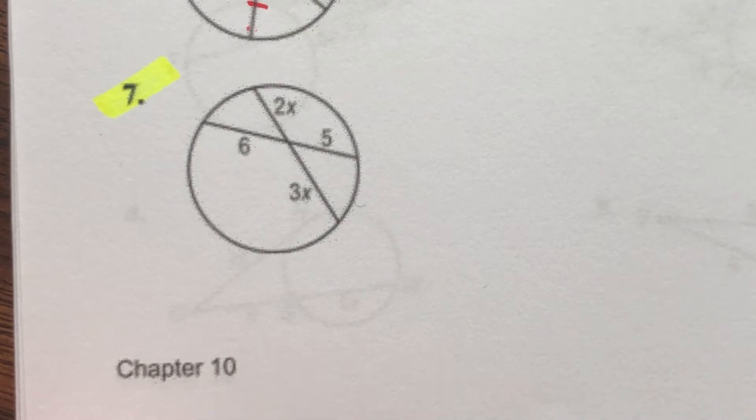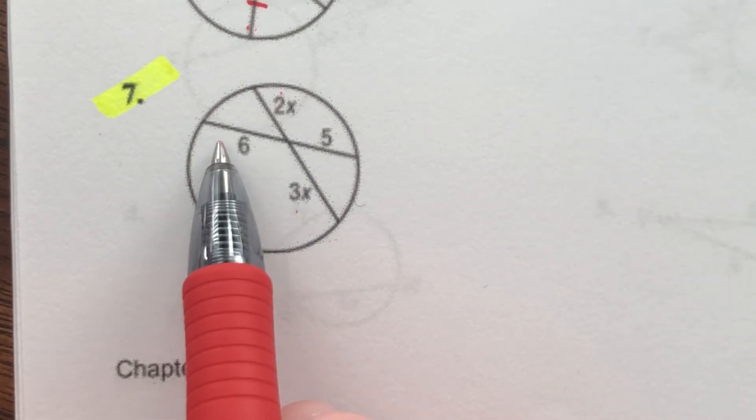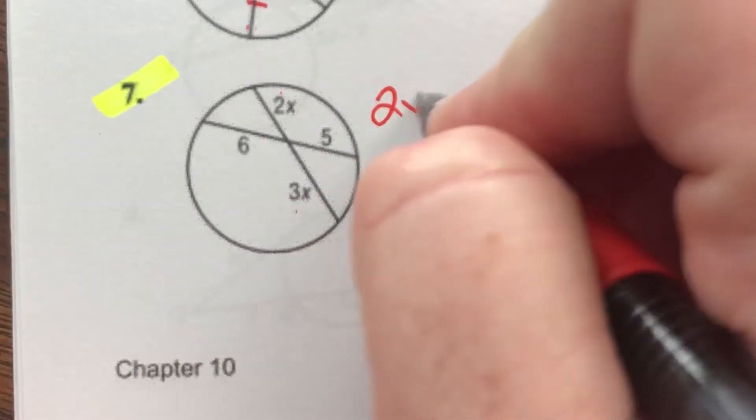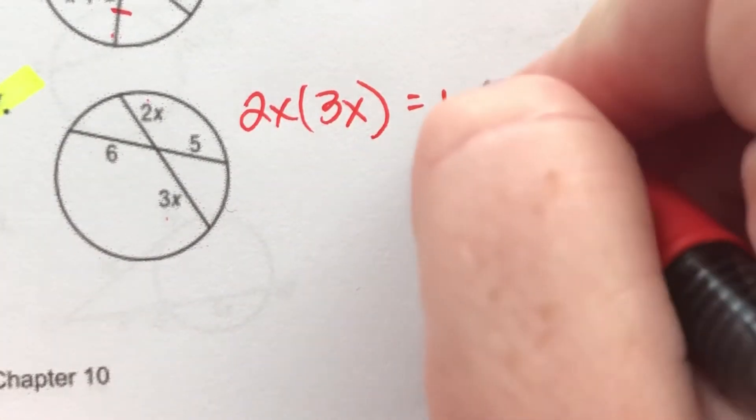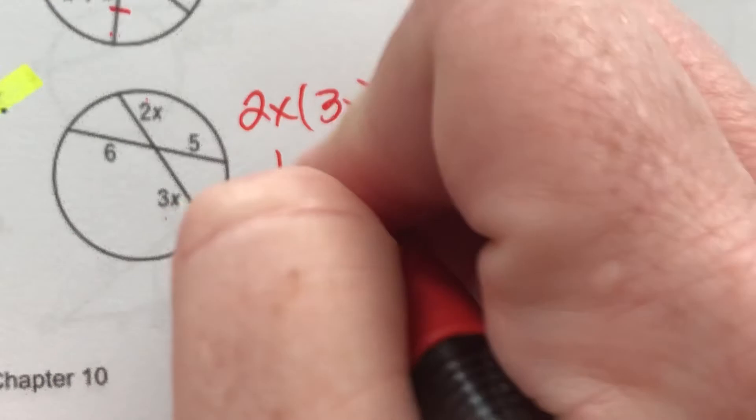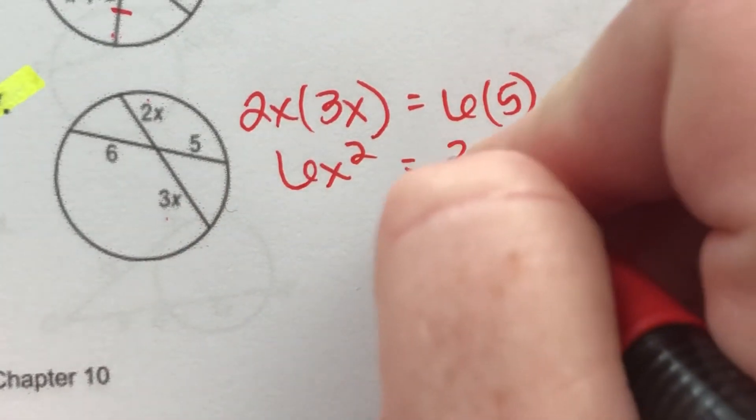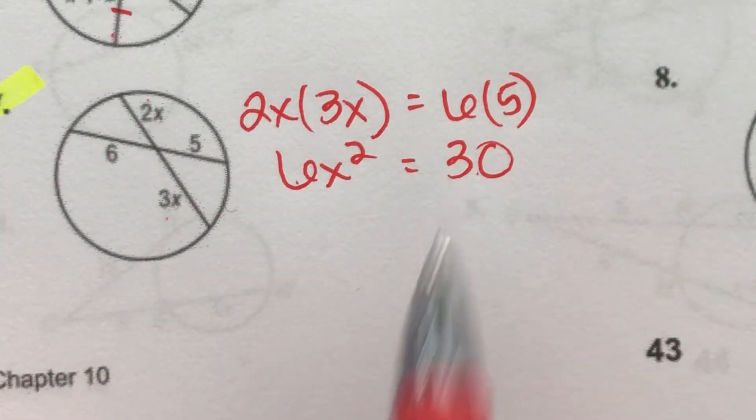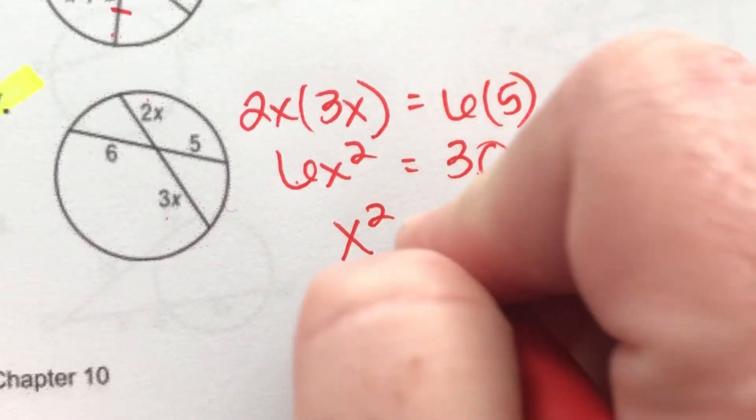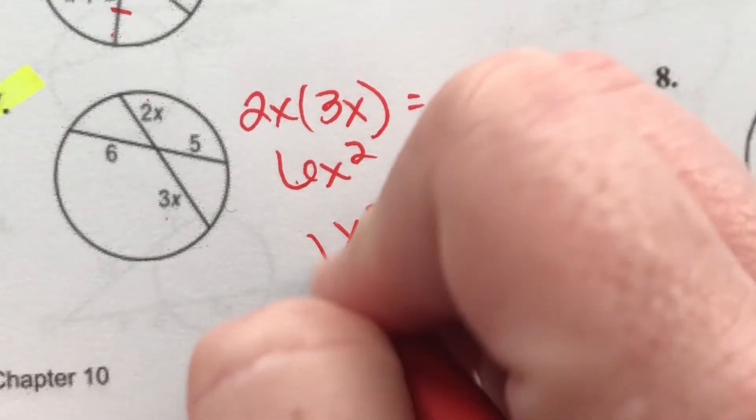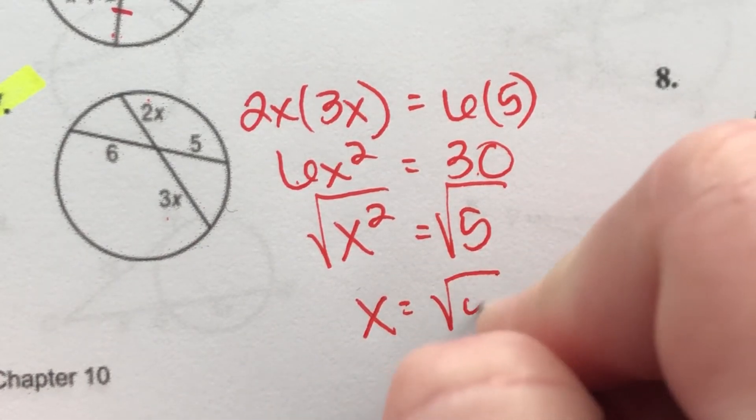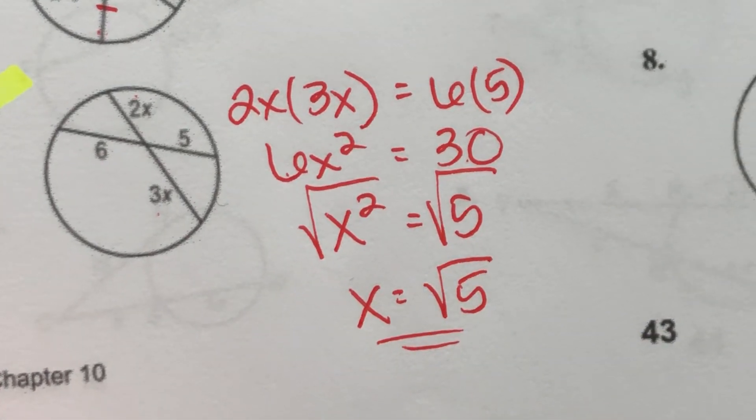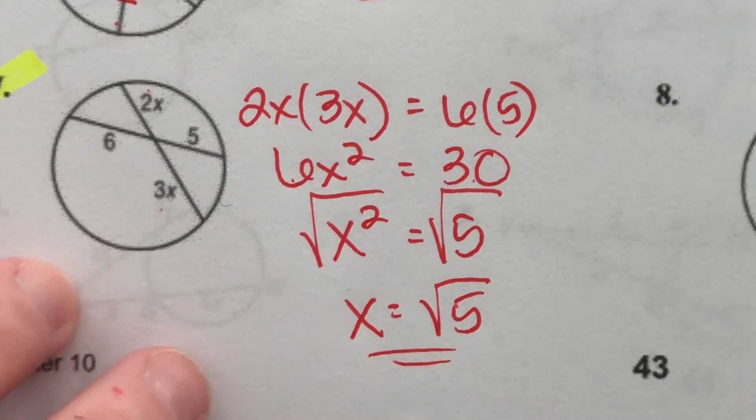Number 7, we're almost done. Another funky one, 2X times 3X is equal to 6 times 5. Okay, so we get 6X squared equals 30. Divide both sides by 6. X squared is equal to 5. Take the square root of both sides. X is equal to the square root of 5. And we don't want to round it, so we just leave it in radical form.